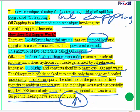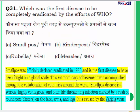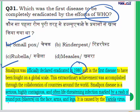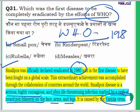Question 31: Which was the first disease to be completely eradicated by the efforts of WHO? The answer is smallpox. Smallpox was officially declared eradicated in 1980 and was the first disease to have been fought on a global scale. Smallpox is a highly contagious and often life-threatening infection with rashes all over the body on the face, arms, and legs. It is caused by the variola virus. Due to the efforts of the World Health Organization, by 1980 the world became free from it.